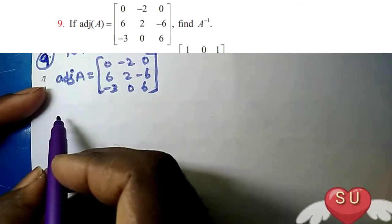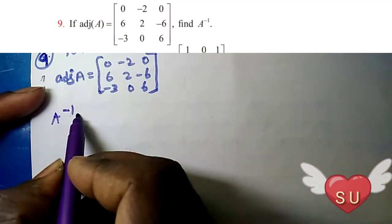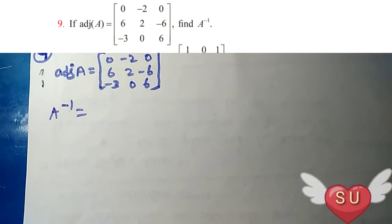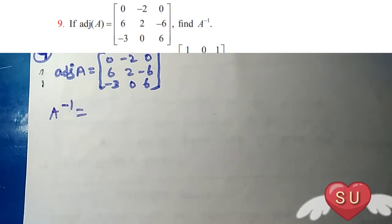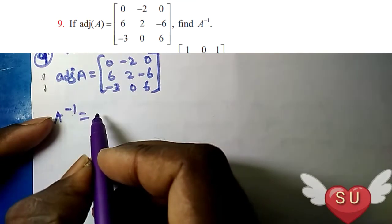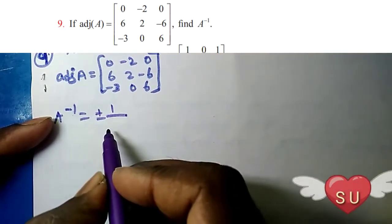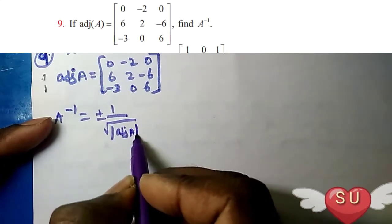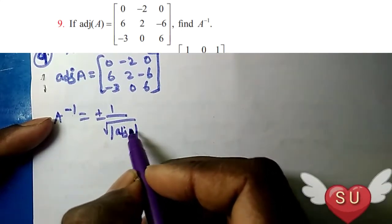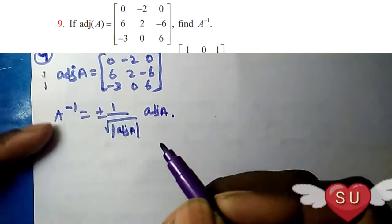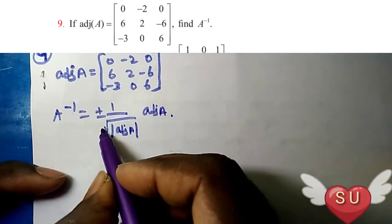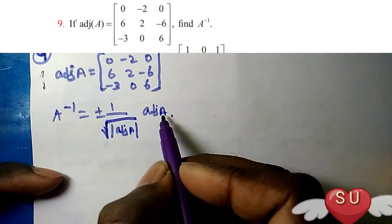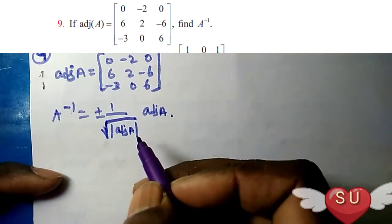Next, we will find A inverse final form. A inverse — so adjoint is equal to A inverse. We will find A inverse final form. So our formula is going back to normal. A inverse is equal to plus or minus 1 divided by root of A times adjoint A, next A into adjoint A.